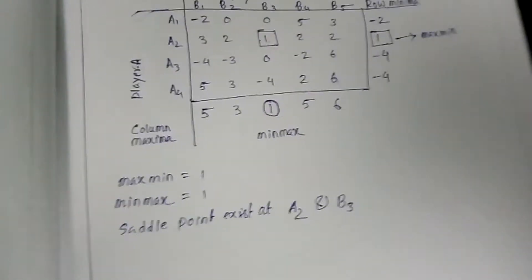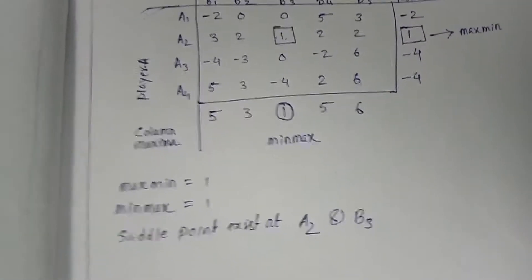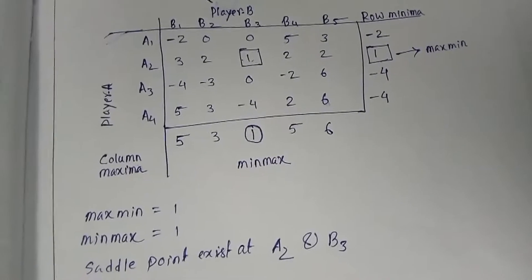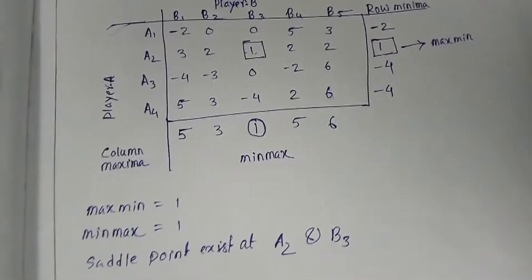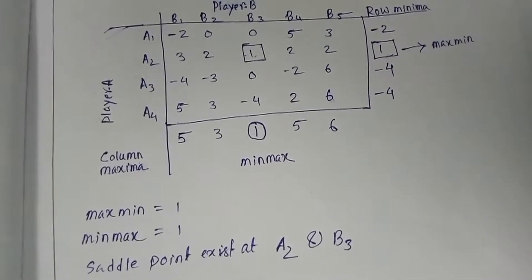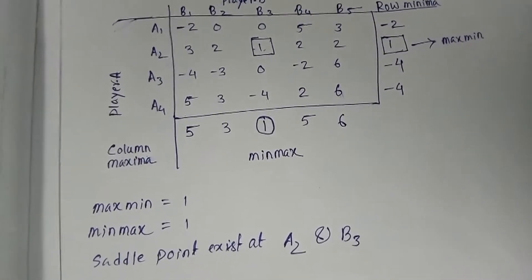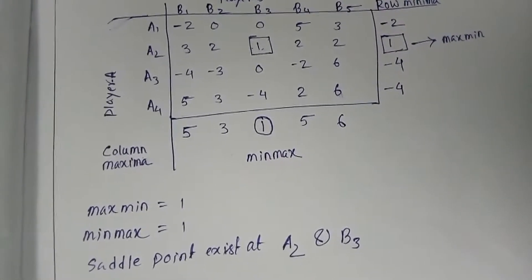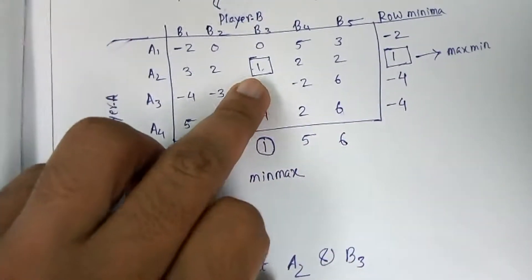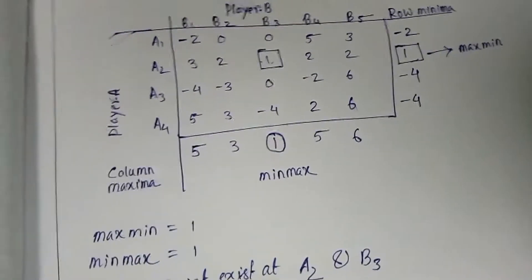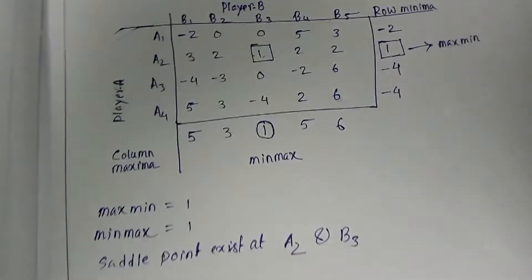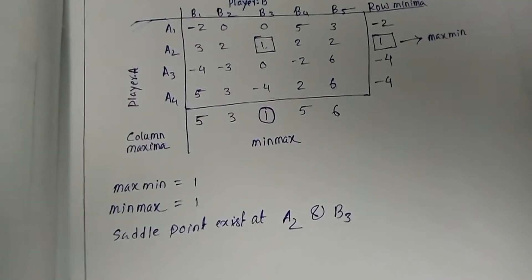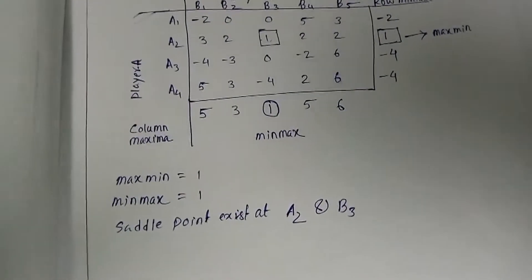Now for the value of the game: the value of the game is the intersection of the minimax and maximin. In our problem, the minimax and maximin intersect at 1, so the value of the game is 1.